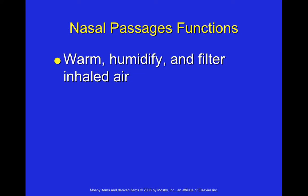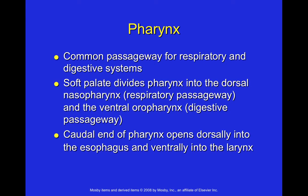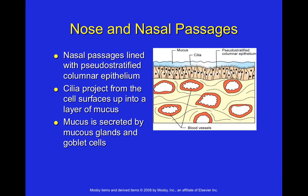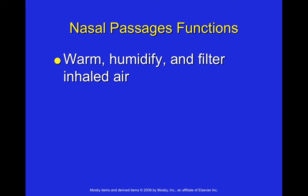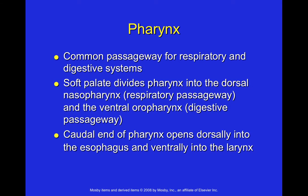The functions of the nasal passageways are to warm, humidify, and filter inhaled air. Air is warmed by blood flowing through vessels just beneath the nasal epithelium, humidified by mucus and other fluids on the epithelial surface, and filtered as it passes through the winding passages created by the turbinates. Particles become trapped in the mucus layer, and the cilia move mucus and trapped foreign material toward the pharynx and mouth where it can be expelled.